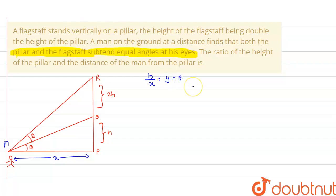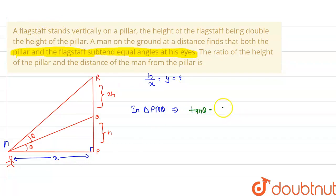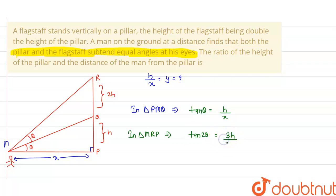Consider the right-angle triangle. In triangle PMQ, tan θ equals the height of the pillar upon the base, which gives tan θ = h/x = y. In triangle MRP, tan 2θ equals the total height of the pillar plus the flagstaff upon the base, giving tan 2θ = 3h/x = 3y.